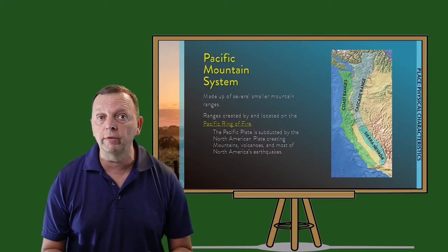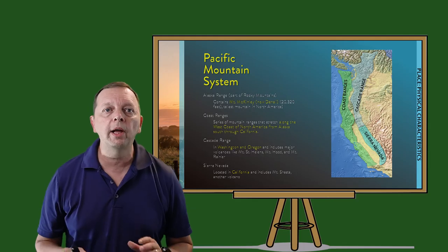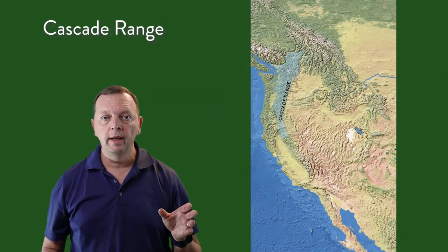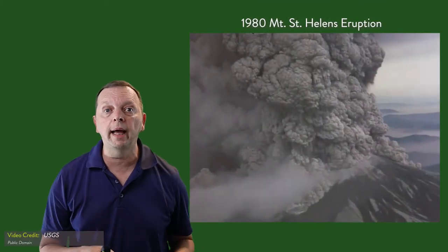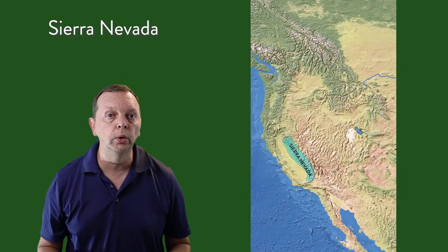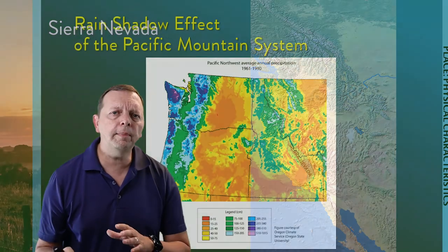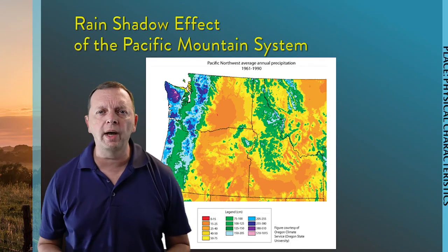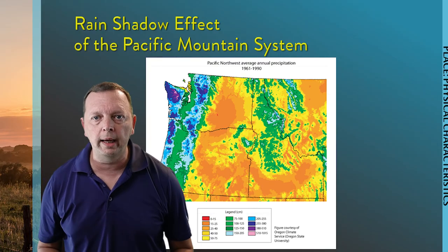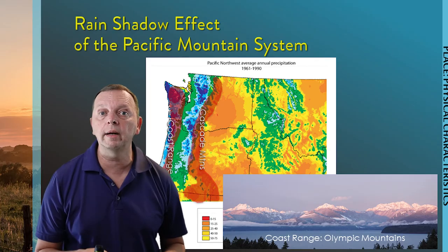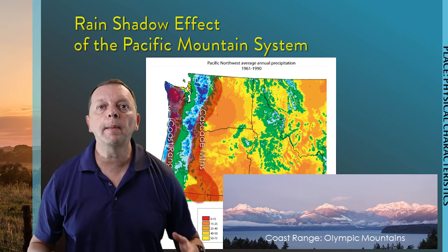The Pacific Mountain System is made up of several mountain ranges, including the Alaska Range, which is part of the Rockies, and the Coast Range that stretches from Alaska all the way down to California. As we go inland, we find the Cascades in Washington and Oregon. The Cascade Range is home to major volcanoes such as Mount St. Helens, which erupted in 1980 and had several smaller eruptions between 2004 and 2008. In California, there is the Sierra Nevadas, which includes Mount Shasta, another volcanic mountain. Between the mountain ranges of the Pacific Mountain System, we can see the rain shadow effect at work. This map shows the precipitation averages for the Pacific Northwest, where two strips of high rainfall correspond with the windward sides of the coast and Cascade Mountains, which block rain from reaching further east — a perfect example of the rain shadow effect.